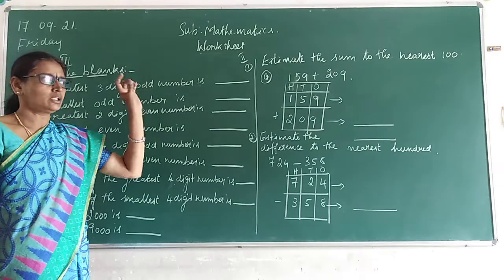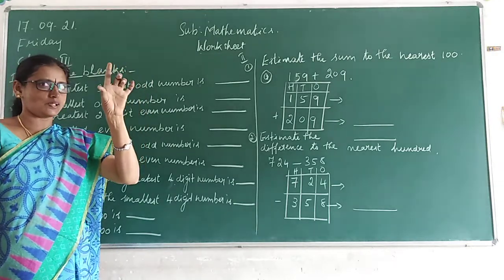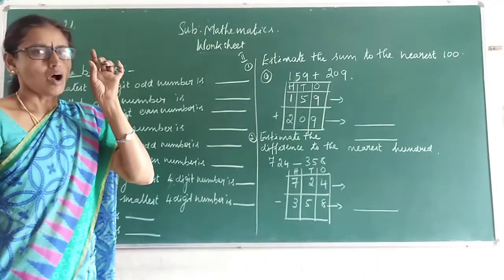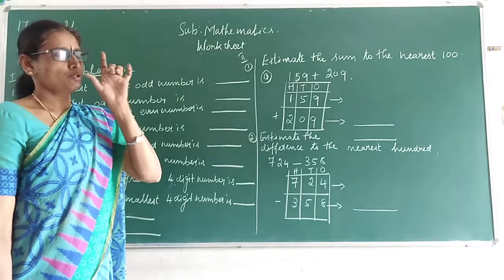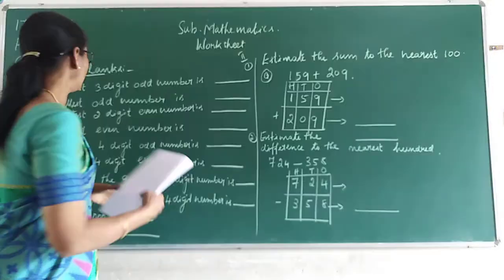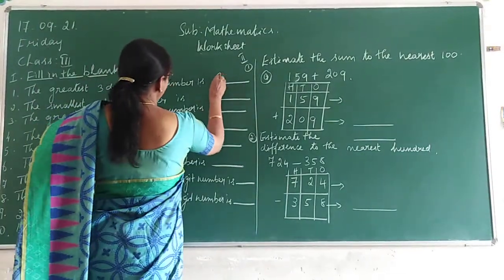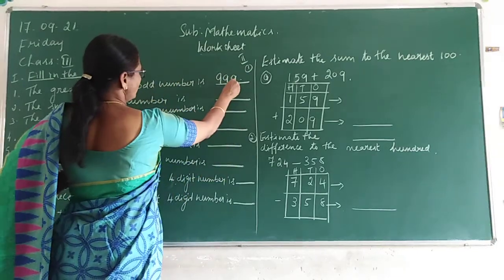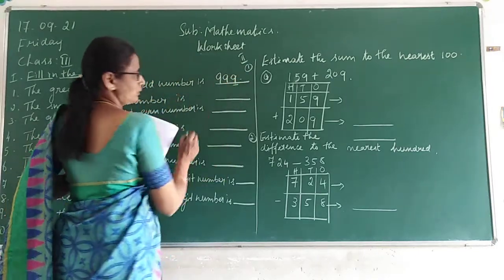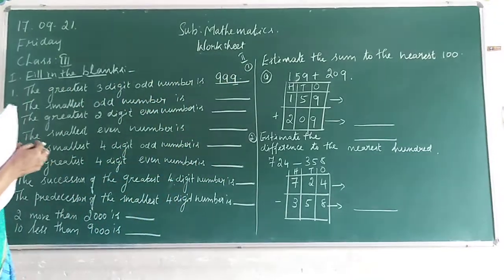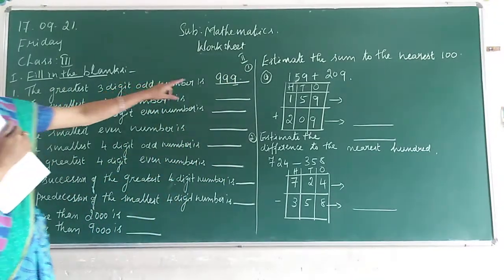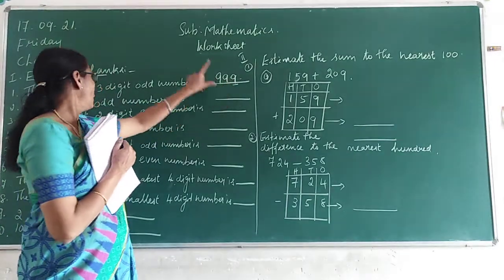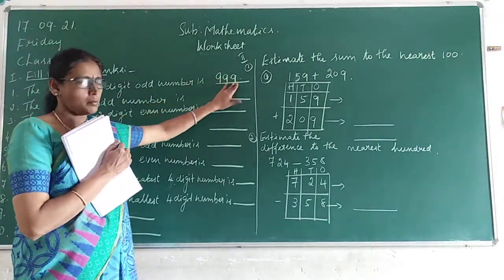999. In one space, 9 is there. 9 is an odd number. So the greatest 3-digit odd number is 999. How to check that — this is in one space, children. So it is an odd number. That is the greatest 3-digit number and also the greatest 3-digit odd number.